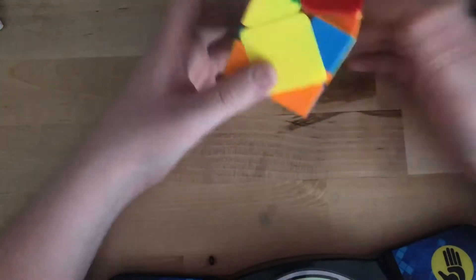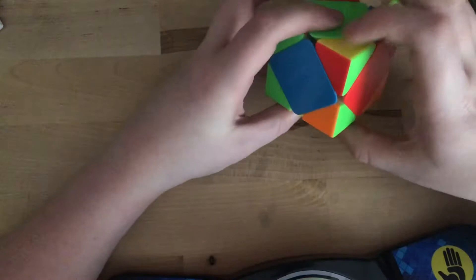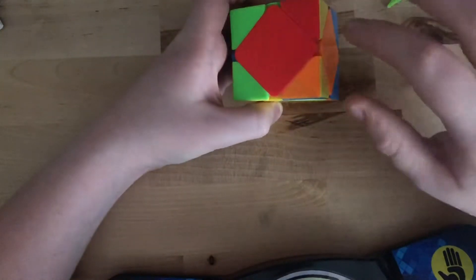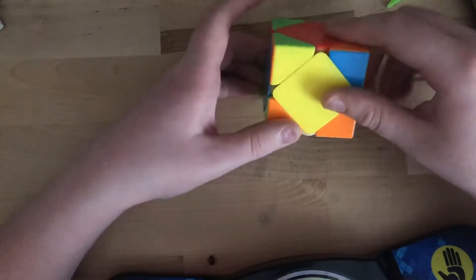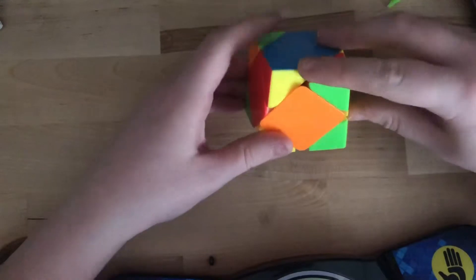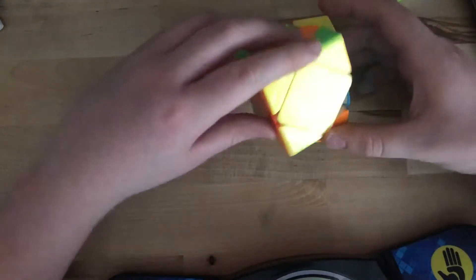And now we have this case where there are two facing opposite directions and two facing the same way. Okay, so put the two facing the same way to the right and do this: right prime, left, right, left.